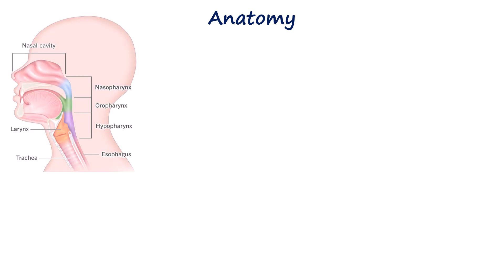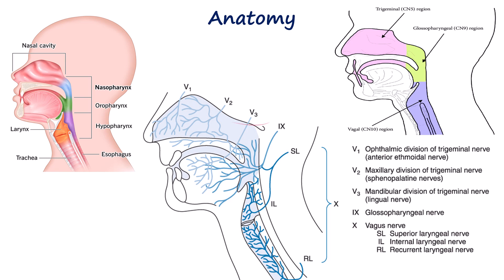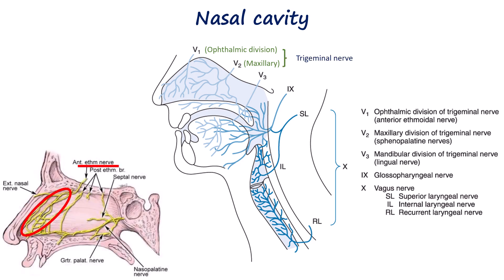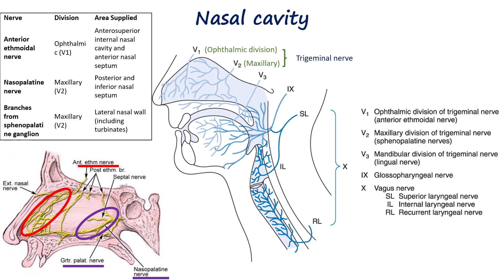The upper airway is divided into the nasal and oral cavities, the pharynx, and the larynx. Sensory innervation of the upper airway is provided by the trigeminal, glossopharyngeal, and vagus nerves, which are essential targets when performing airway anesthesia for awake fiber-optic intubation. The sensory innervation of the nose is provided by the ophthalmic and maxillary divisions of the trigeminal nerve. The anterior ethmoidal nerve, from V1, supplies the anterosuperior internal nasal cavity and the anterior nasal septum, while the nasopalatine nerve and branches from the sphenopalatine ganglion, both from V2, supply the nasal septum and lateral nasal wall.